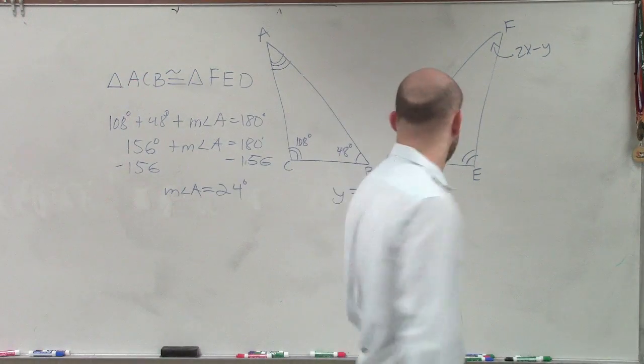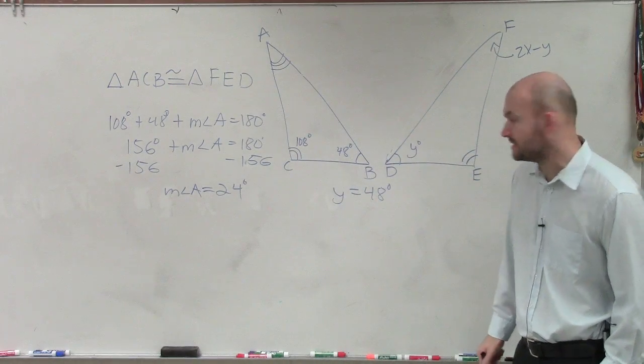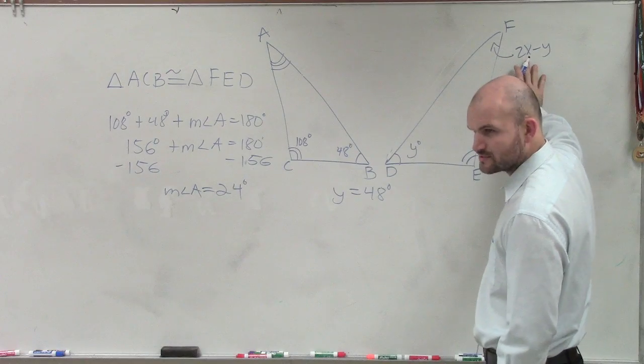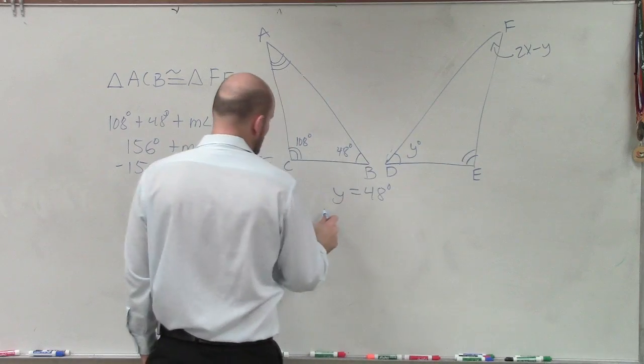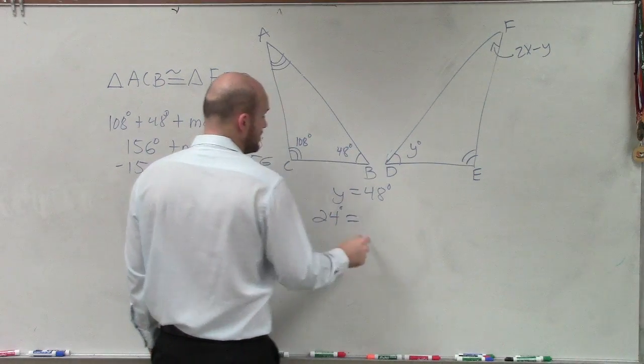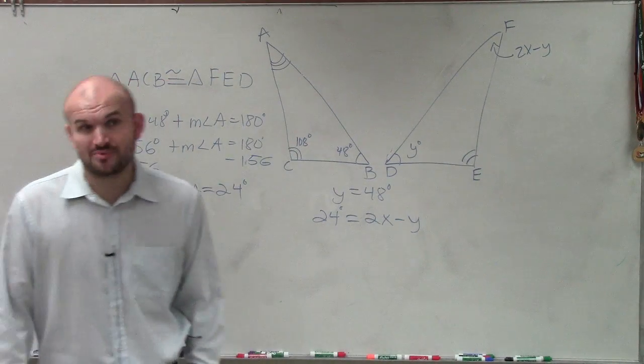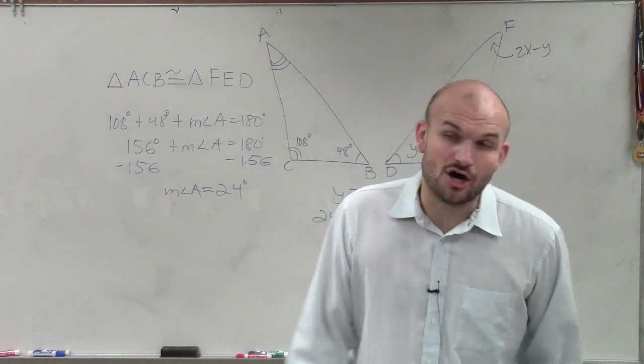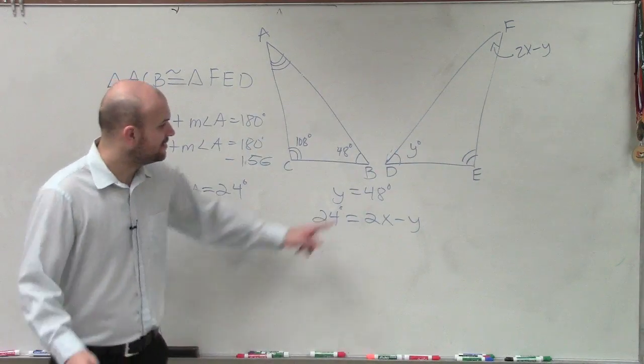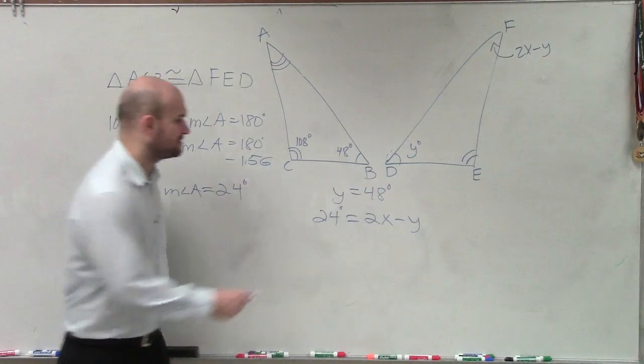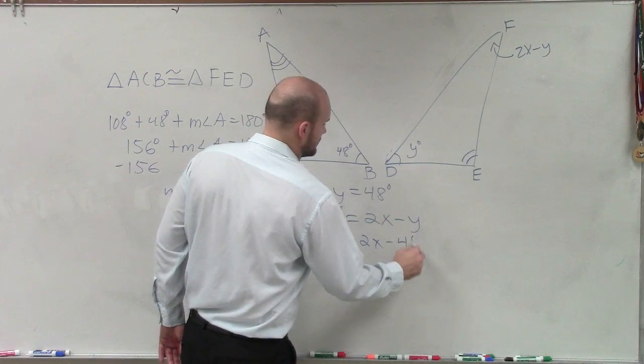So now we know what the measure of angle A is, 24 degrees. It's 2x minus y. So now what we can do is we can write an equation. We know that 24 degrees is equivalent to 2x minus y. But there's a problem with that equation because we have two variables. And to solve an equation with two variables, you have to have two separate equations. But fortunately for us, we know that y equals 48. So I can rewrite 24 equals 2x minus 48.